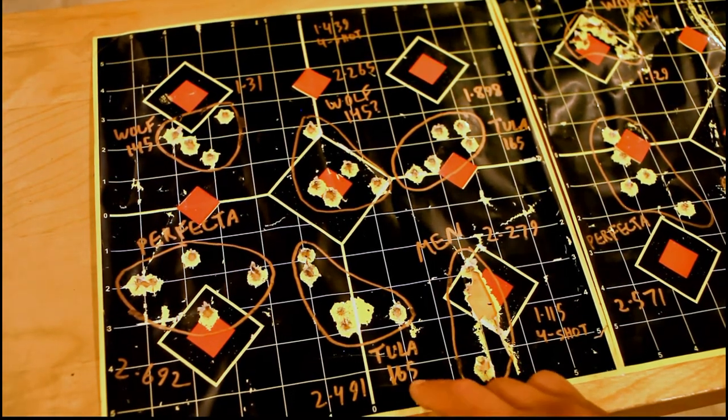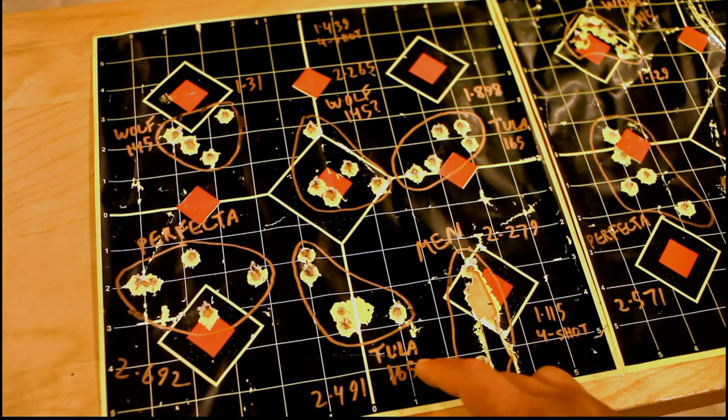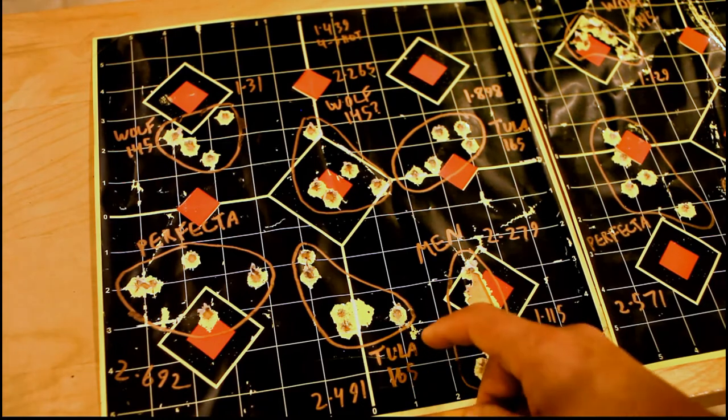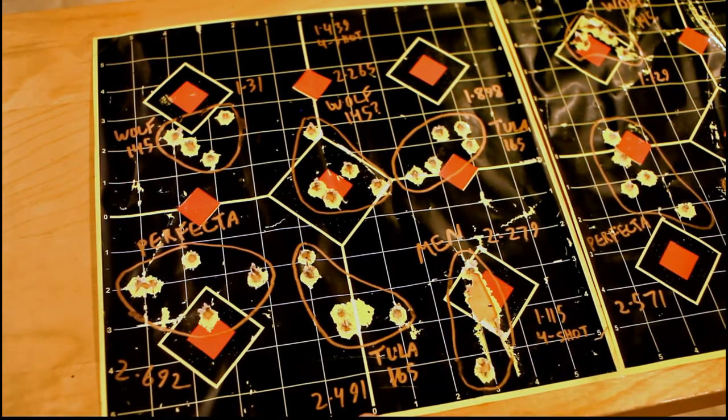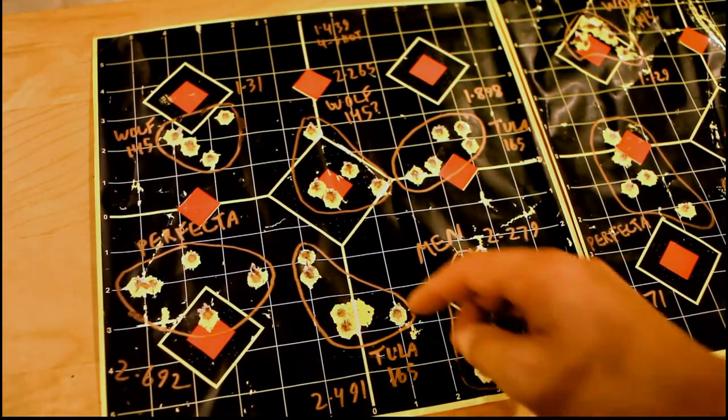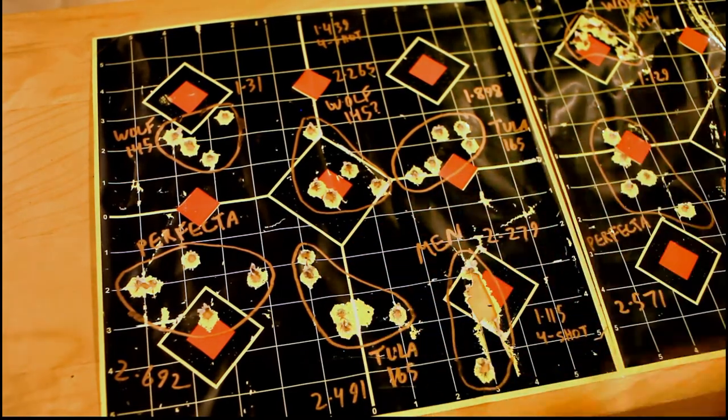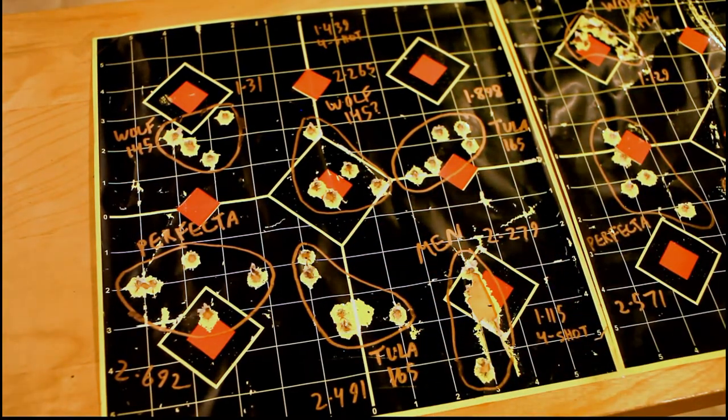As for the Tula 165s, they are definitely not as good at 100 yards. This 5-shot group measured 2.5 inches, 2.4. I don't think you can disregard two flyers. These three are pretty tight. But all in all, pretty respectable for the price.